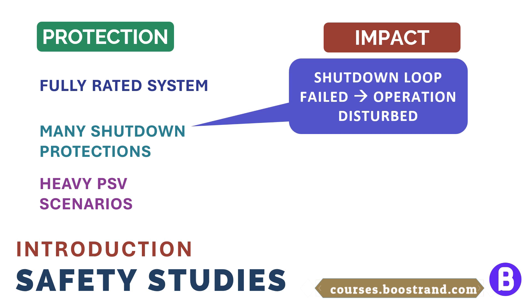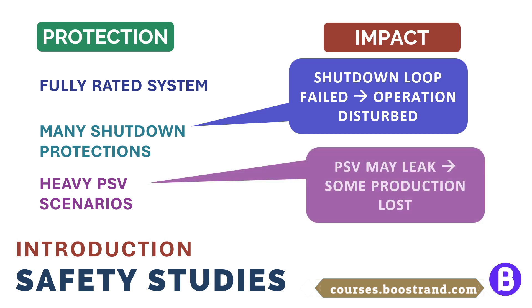For example, a shutdown valve may close in a position that causes disturbance to the process. Unnecessary ESD protection actions may paralyze the operators and make their mission to operate the plant more difficult with no strong justification. A PSV may also leak or open at a pressure less than its set pressure if the PSV wasn't well calibrated, which shall introduce an unnecessary process interruption.